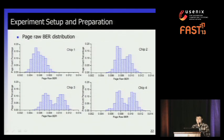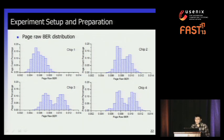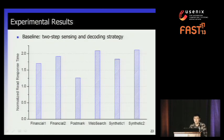This is the result: the page BER distribution for four different chips, each distribution made from over 4,000 pages randomly distributed across the whole chip. We can see the reliability variance between chips and between upper and lower pages. In chip 3 and chip 4, it is very clear that the upper page and lower page have different reliability. With the LDPC error correction capability curve, all time parameters, and page BER statistics, we can feed these into our simulator and start simulation.